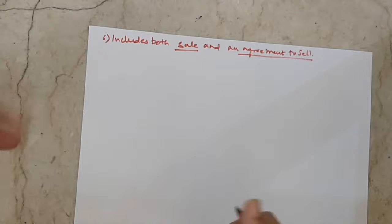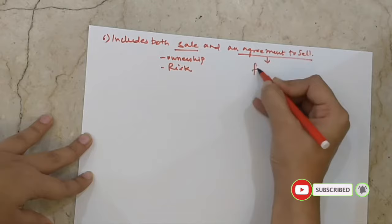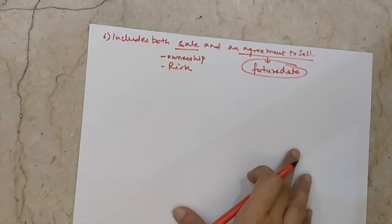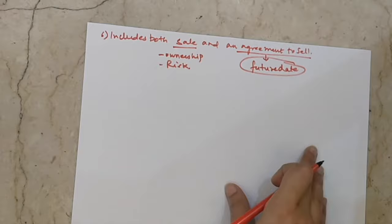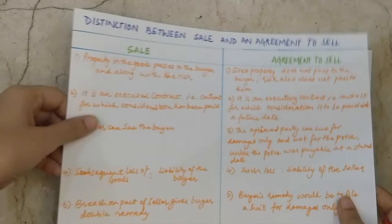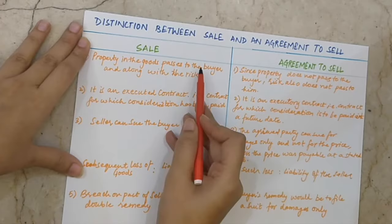Sale mostly happens at the same time — when we go to a market, we like something and buy it. At that same moment, ownership transfer and risk transfer take place. But in an agreement to sell, there is an agreement to be completed on a future date. Until that future date arrives, ownership is not transferred. An agreement to sell becomes a contract of sale — which means a sale — only when the condition is complete. This is the difference between sale and agreement to sell.